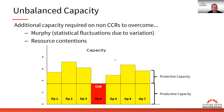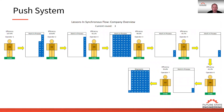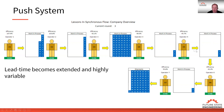If we work in a push system where our goal is to keep all resources busy and activated, what happens when we look at the results of a push system is we have high efficiencies in the front of the process. After the capacity constraint, we have lower efficiencies. And what happens is we build excess work in process. So if we have an unbalanced system, lead time becomes extended and highly variable.